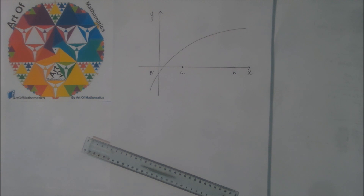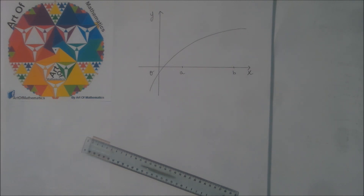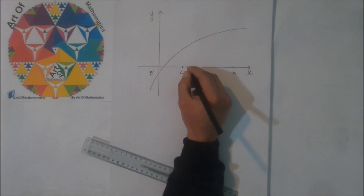The assumption is to divide the interval AB into N equal parts such that the length of each part is equal to B minus A divided by N. So let's divide this interval.